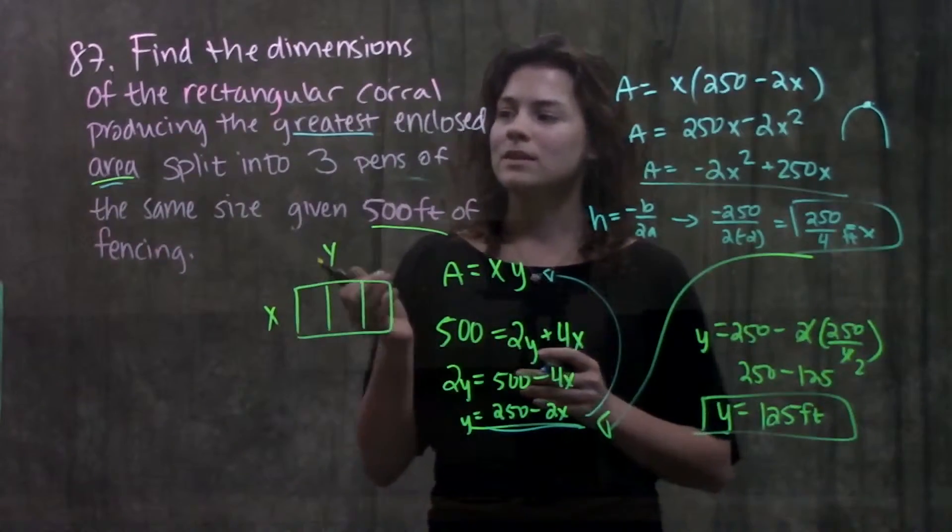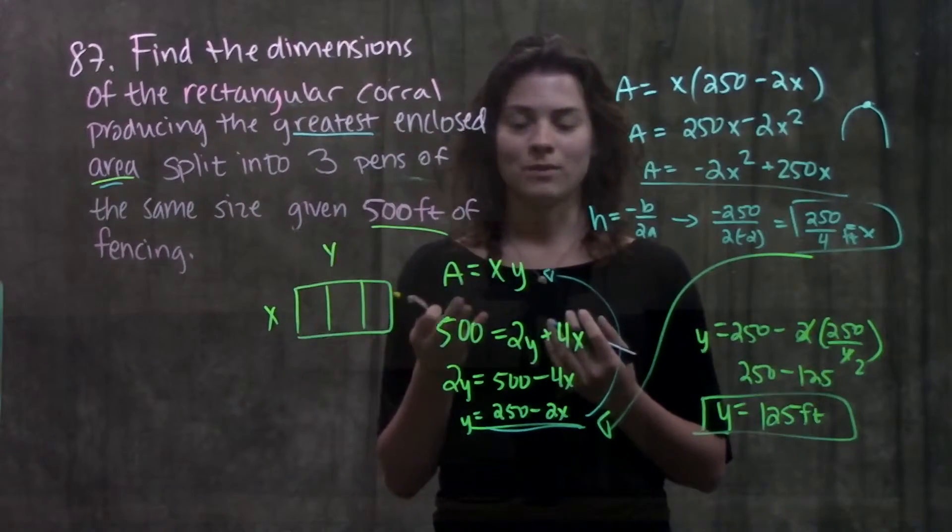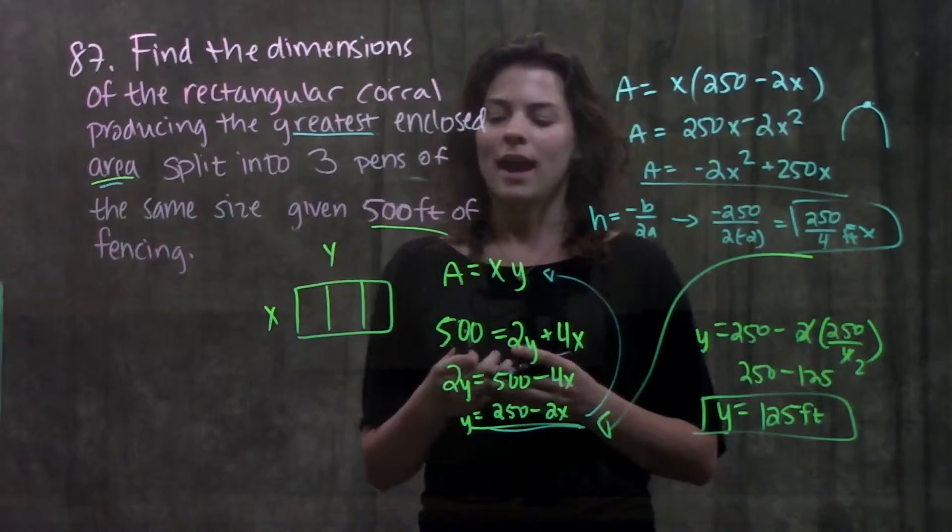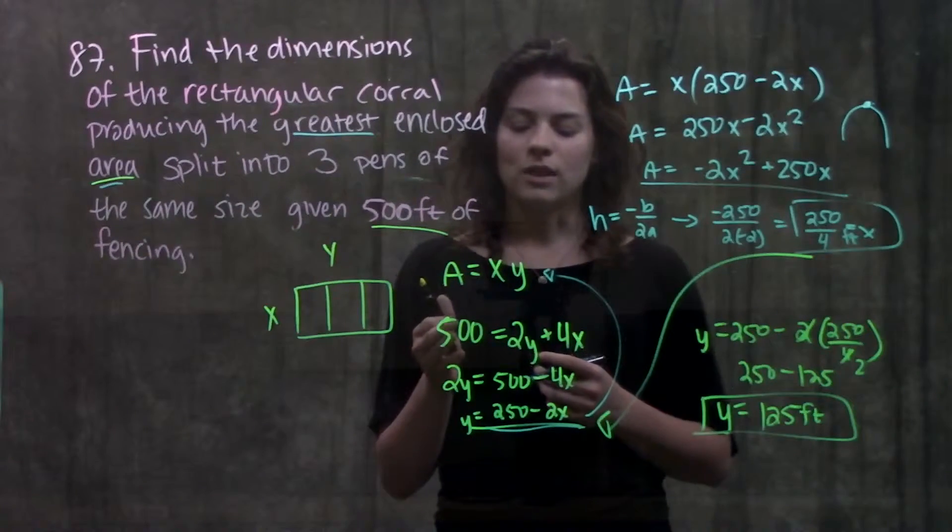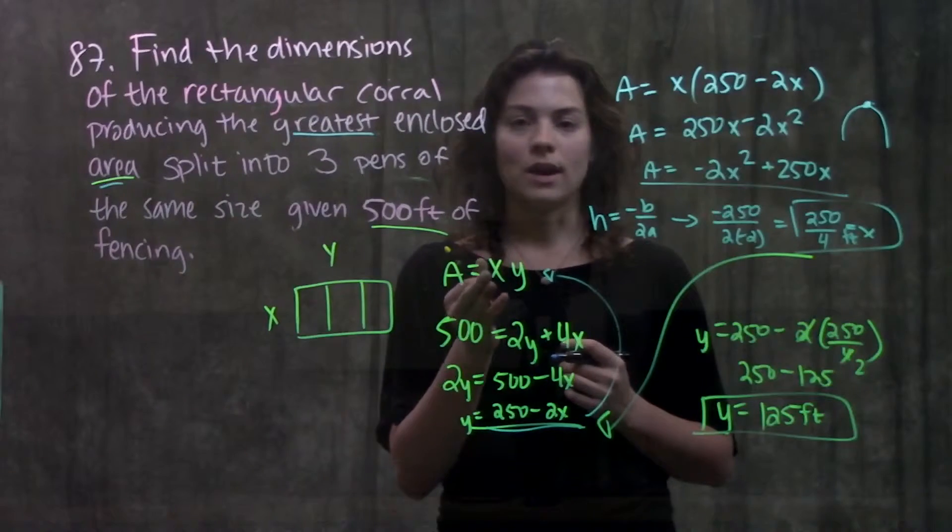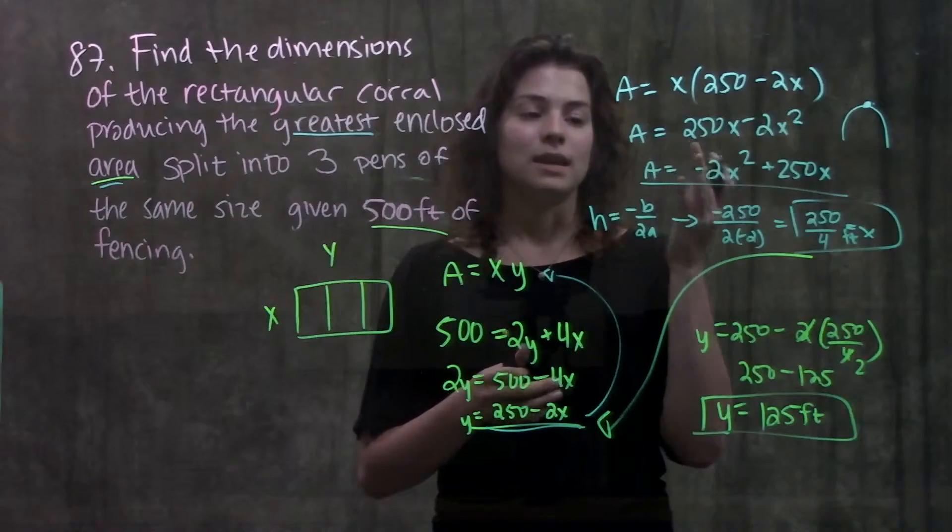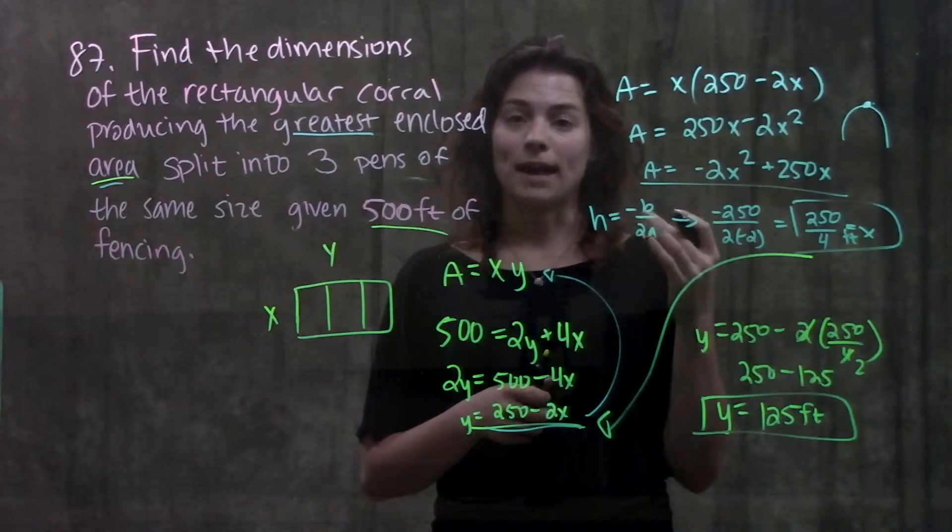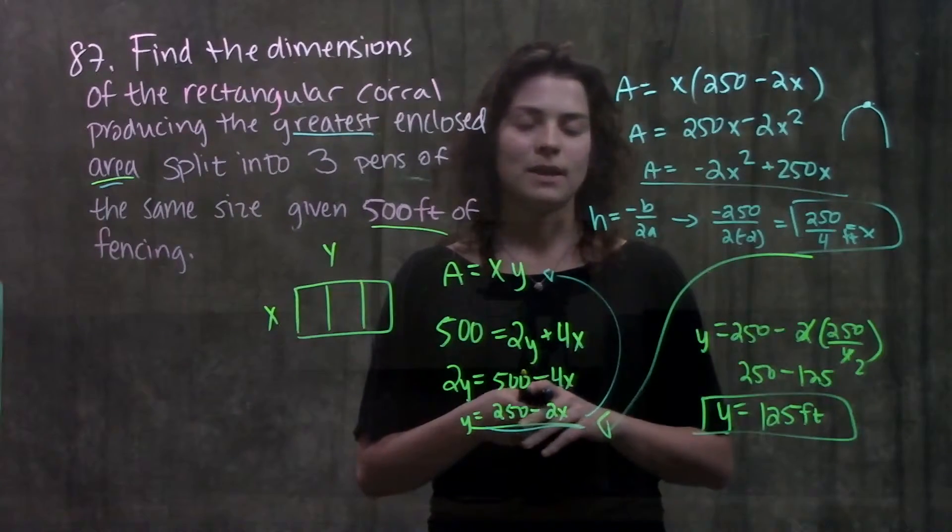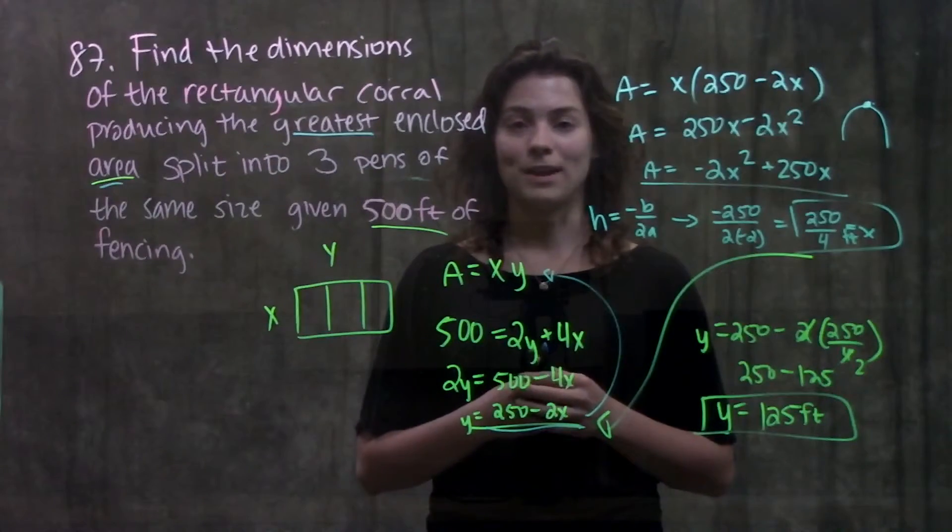So recap to solve this problem. First we drew it out to see what they were telling us and what they were asking us for. And then we found two equations that related our variables so that we could solve for one, plug it into our other formula and then solve for what they were looking for. Since we had a quadratic and they're asking for a max value, we just found our vertex and that gave us the dimensions of our rectangle that give us the maximum area.